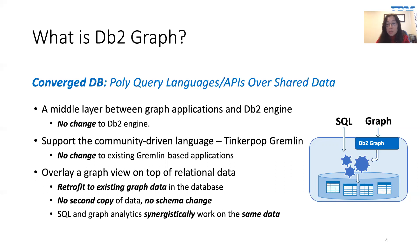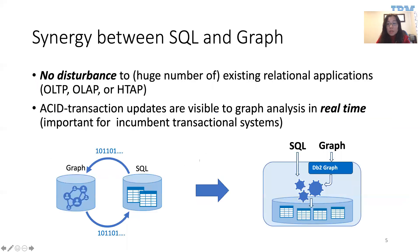With DB2 Graph, SQL and graph analytics can synergistically work on the same data. The synergy between SQL and graph means there is no disturbance to your existing relational applications — whether OLAP, OLTP, or HTAP — and transactional updates from the SQL side are visible to graph analysis.